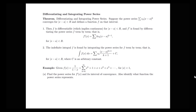Suppose I have a power series, the sum of Ck times (x minus a) to the k, which is a power series centered at a. Suppose it converges in an interval around my center — I have some radius of convergence r greater than zero — and defines a function on that interval. Then my function equal to that power series is differentiable, which means it's continuous, for the same radius of convergence.